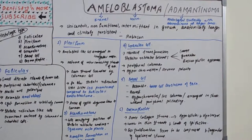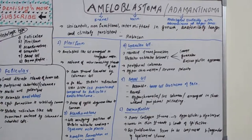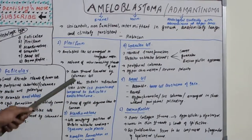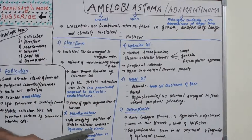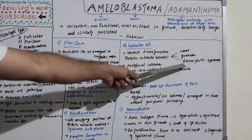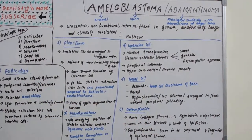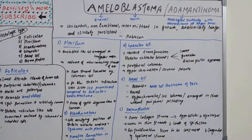For a long exam question (14 marks), you can build content using all histological types. Key points: follicular — nuclei polarized, resembles ameloblasts; plexiform — stellate reticulum less prominent; acanthomatous — squamous metaplasia; granular — coarse granular eosinophilic appearance; basal cell — resembles BCC; desmoplastic — compression and fragmentation of hyalinized stroma.